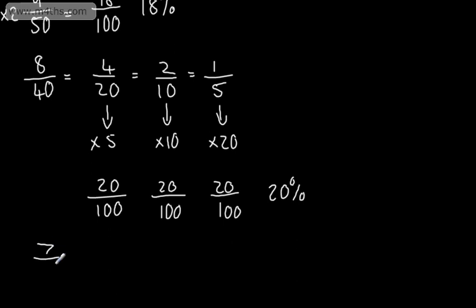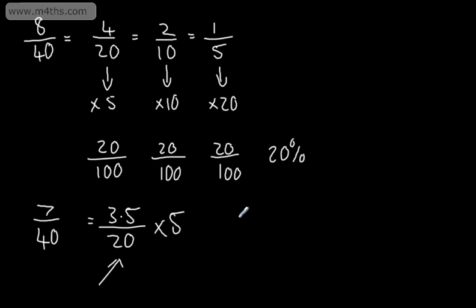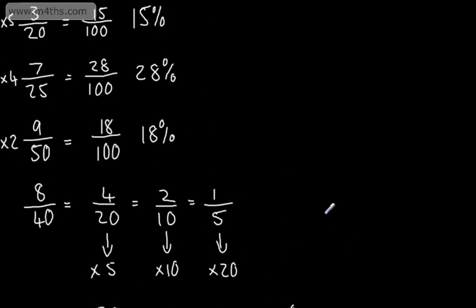Let's look at another one: 7 out of 40. For this one, we can't halve and get a nice whole number value. But what I could do is halve it to write an equivalent fraction — 3.5 over 20. I've now got my factor of 100, so I multiply the numerator and denominator by 5. 5 times 3 is 15, and 5 times 1.5 is 2.5, giving me 17.5 over 100 — which is 17.5%. So we can do those without a calculator.